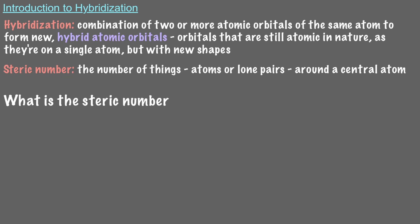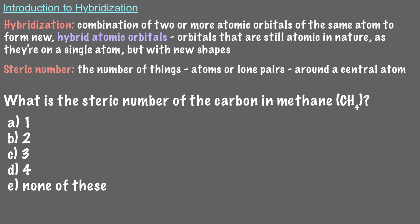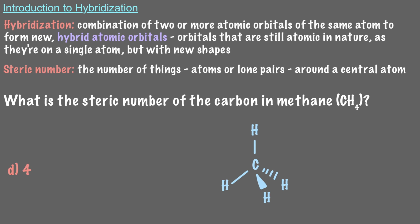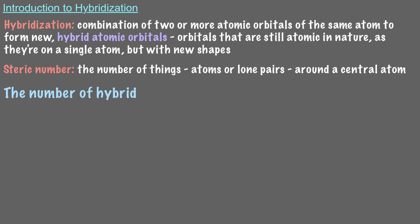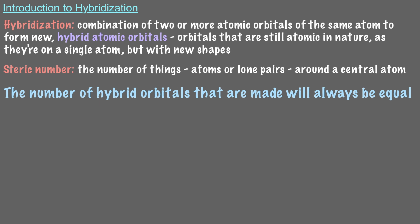What is the steric number of the carbon in methane? The central atom, carbon, has four hydrogens attached to it and no lone pairs, which means its steric number is four. For central atoms with a steric number of four, four atomic orbitals combine to form four hybrid orbitals. The number of hybrid orbitals made will always be equal to the steric number of the central atom.